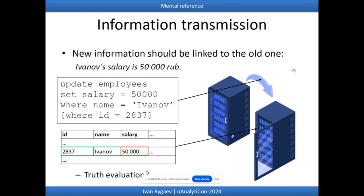From the point of view of information transmission, consider a computer metaphor: if one server wants to communicate something to another server, new information should be linked to the old one in the second server. The first server issues an update statement — for example, to communicate that Ivan's salary is five thousand rubles, the command would be: UPDATE table SET salary = 5000 WHERE name = Ivan. The table is then updated and the new value is stored.